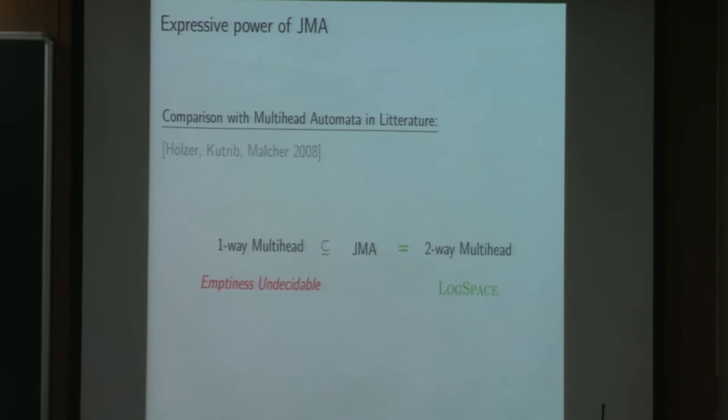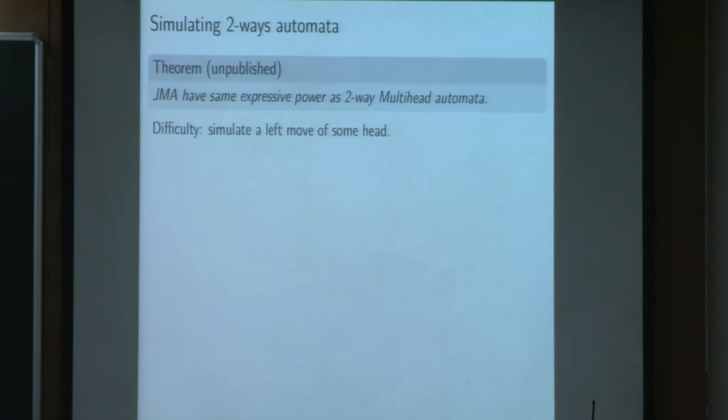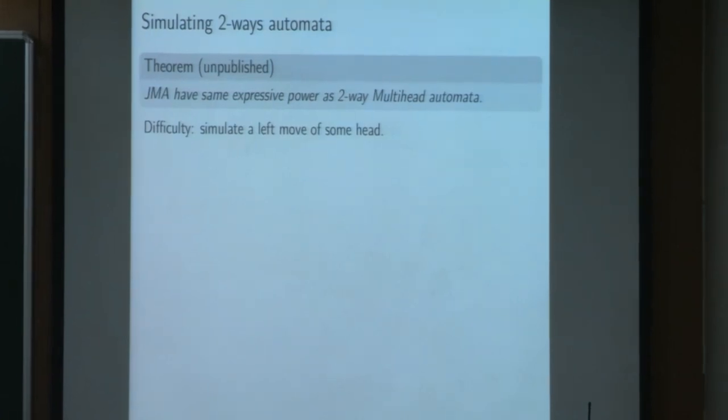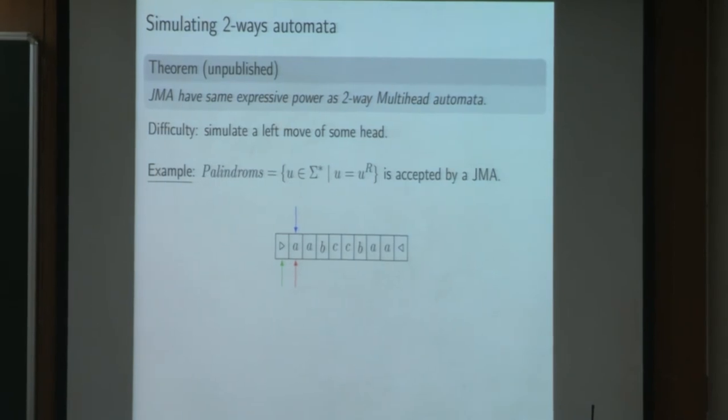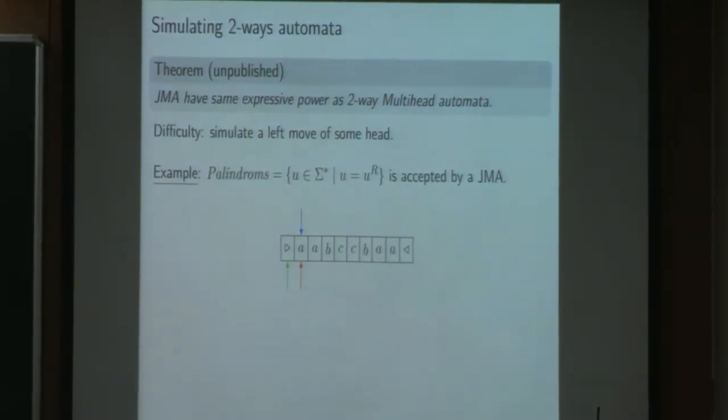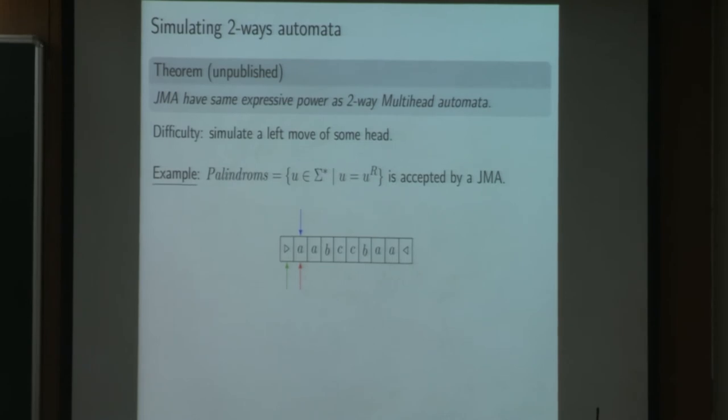And we thought and we conjectured in the paper that our model was strictly less expressive than two-way multi-head automata. But in fact, it is equal and we have a proof that is written but not published yet. The difficulty is to simulate a left move of one of the heads with jumping. And I will show you a bit how we can do this by doing the example of the palindrome's language, which is kind of representative of what we can do with two-way automata.